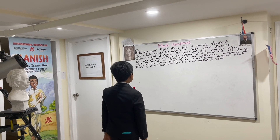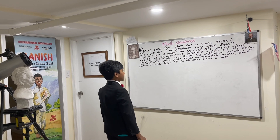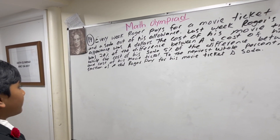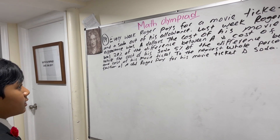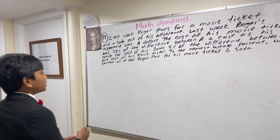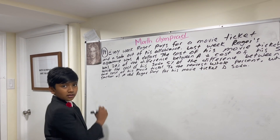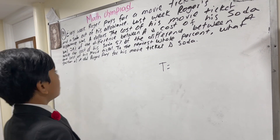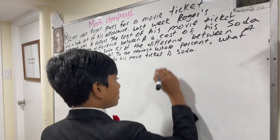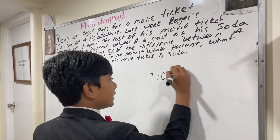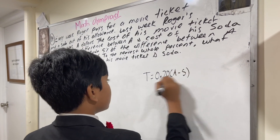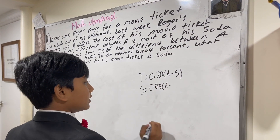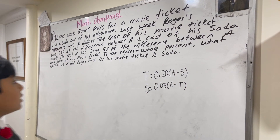The cost of the movie ticket was 20% of the difference between A and the cost of his soda. The cost of his soda was 5% of the difference between A and the cost of his movie ticket. So the cost of his movie ticket was 20% of the difference between his allowance and his soda, and the soda is 5% of the difference between the allowance and the ticket.